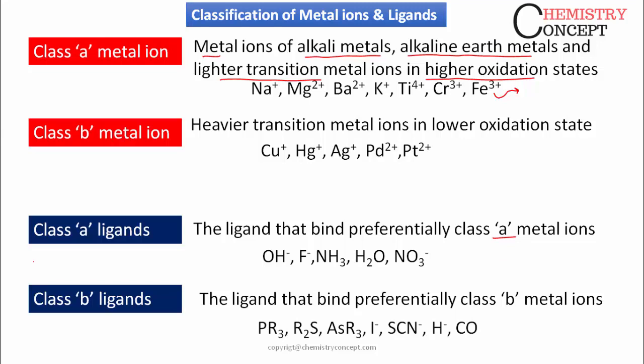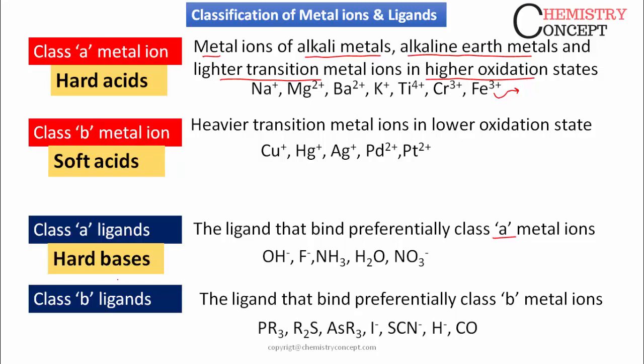Metal ions — that is, cations — which accept electron pairs are called acids, and the ligands which can donate a pair of electrons are called bases. On that basis, Class A metal ions are called hard acids, Class B metal ions are called soft acids. Similarly, Class A ligands are called hard bases and Class B ligands are called soft bases.